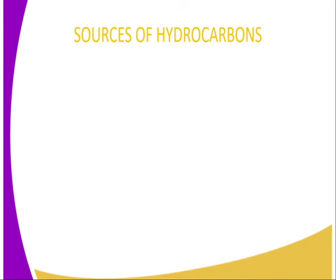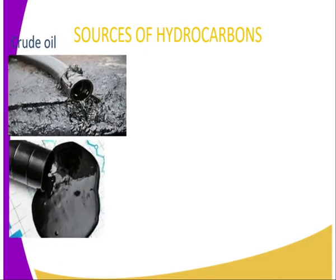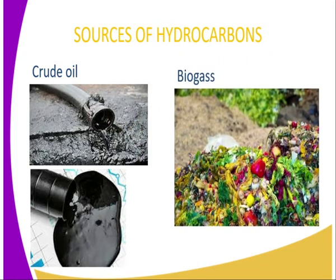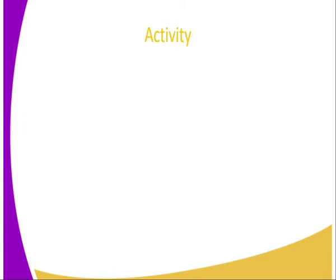Where do hydrocarbons come from? Sources of hydrocarbons: we get them from crude oil, which is the main source of hydrocarbons. We also get these organic compounds, or hydrocarbons, in biogas, or from decomposing organic matter, which may be from market garbage or cow dung. We get biogas there, which is a main source of hydrocarbons.